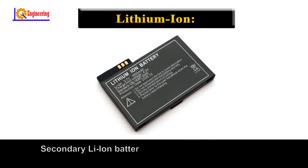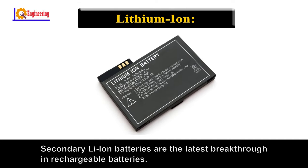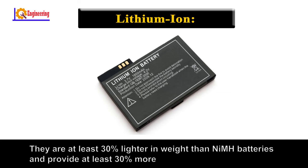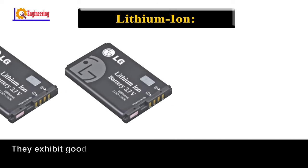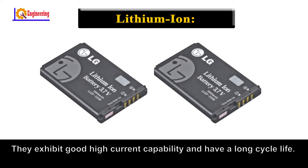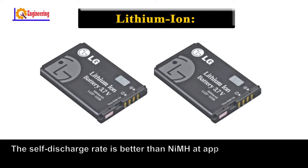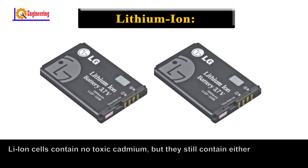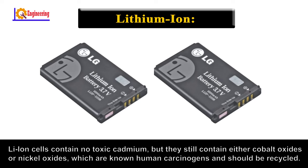Lithium-ion: secondary lithium-ion batteries are the latest breakthrough in rechargeable batteries. They are at least 30% lighter in weight than NiMH batteries and provide at least 30% more capacity. They exhibit good high current capability and have a long cycle life. The self-discharge rate is better than NiMH at approximately 20% per month. Overheating will damage the batteries and could cause a fire. Lithium-ion cells contain no toxic cadmium, but they still contain either cobalt oxides or nickel oxides, which are known human carcinogens and should be recycled.